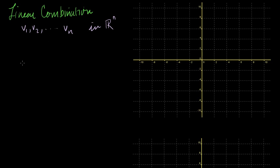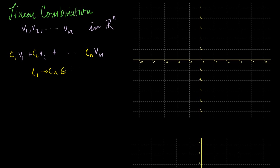It's some combination of a sum of the vectors — v1 plus v2 plus all the way to vn — but you scale them by arbitrary constants c1, c2, all the way to cn, where everything from c1 to cn are all members of the real numbers. That's all a linear combination is.